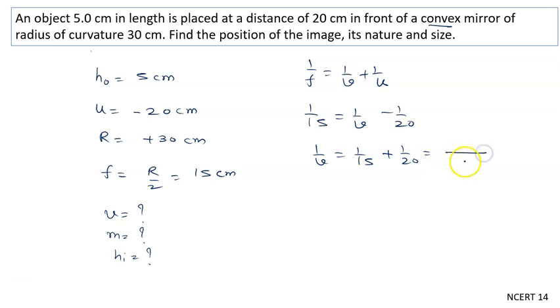We take 60 as the LCM. 4 plus 3 equals 7, so it is 7/60. v will be given by 60/7 centimeters, which is 8.57 centimeters. The image will be obtained at a distance of 60/7 cm, and this v is positive. Positive means behind the mirror.